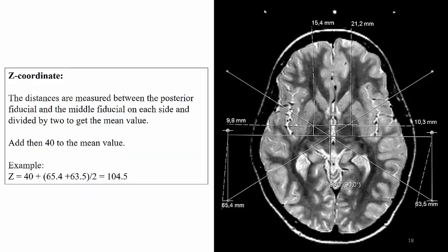In order to get the z-coordinate, we measure the distance between the posterior fiducials and the middle fiducial on each side and divide by 2 to get the mean value. We then add 40 to the mean value.